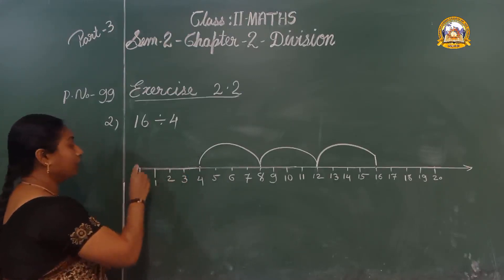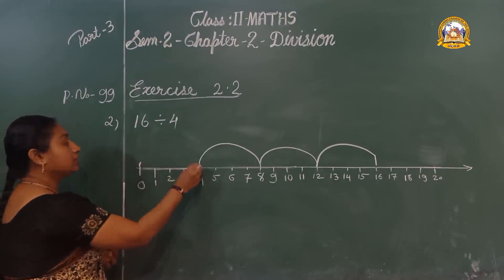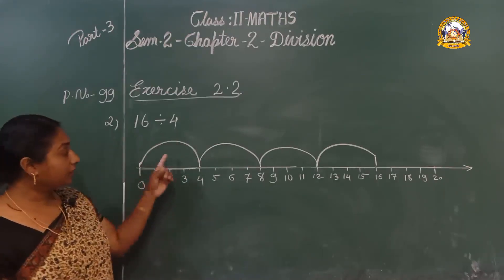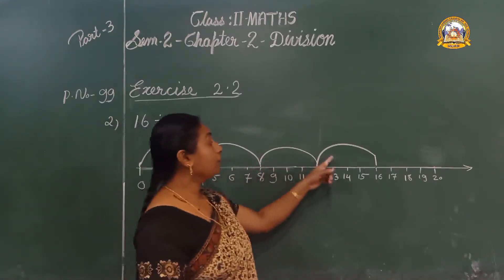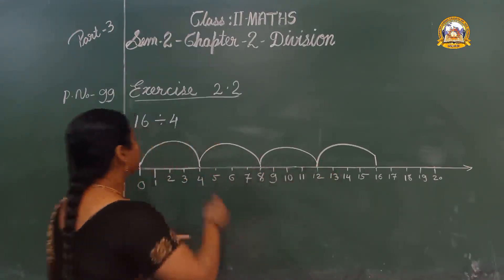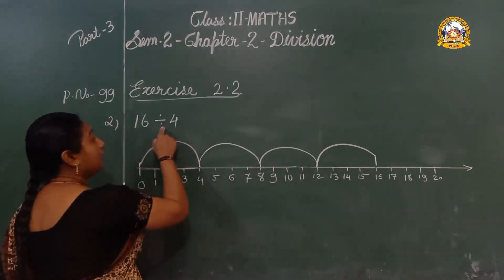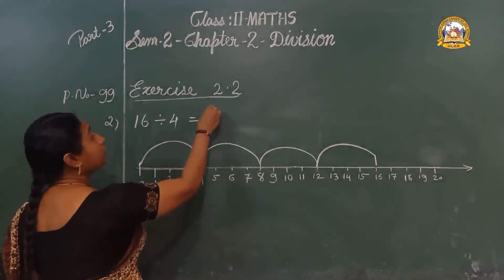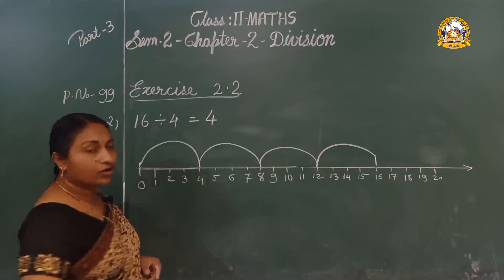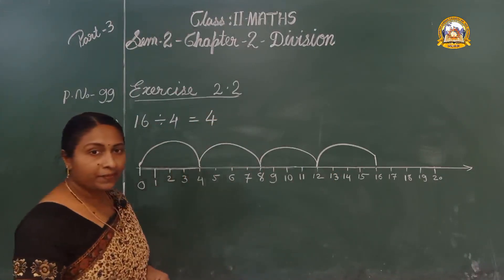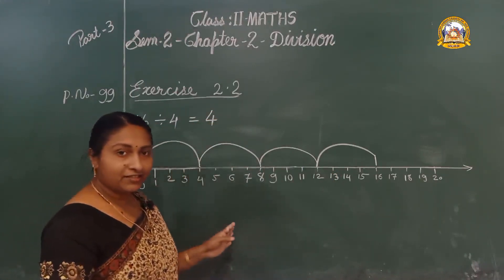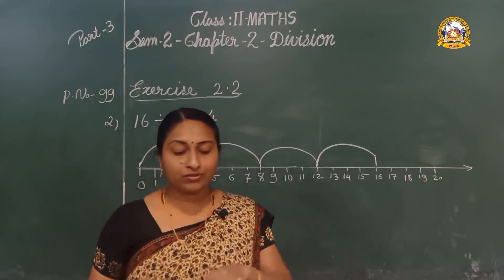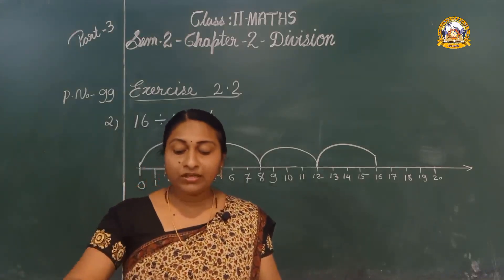How many jumps are there? 1, 2, 3, 4. So 16 divided by 4 is 4. Did you get it? Yes, it is very easy. You can do these exercises in your book.